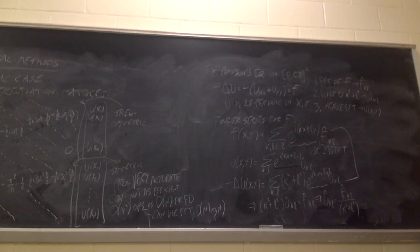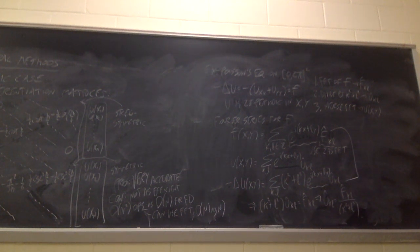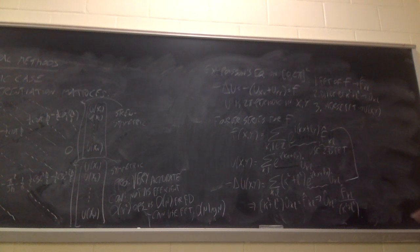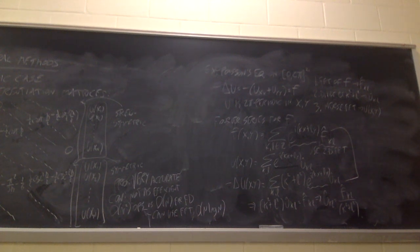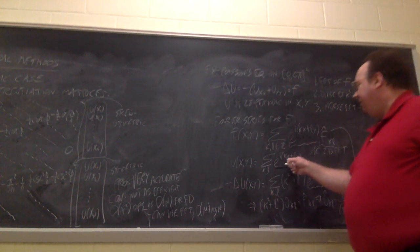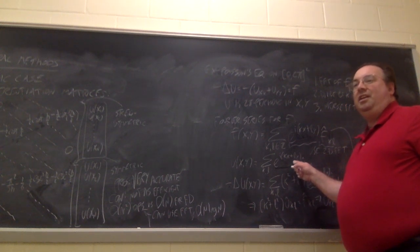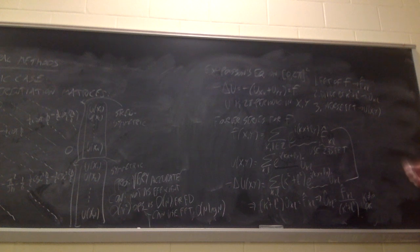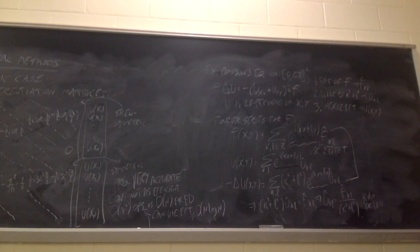There is one sticky point: when can we not divide? When k² + l² = 0, which only happens when k = 0 and l = 0 simultaneously, since the sum of squares is non-negative. So we cannot perform this division for k = l = 0.